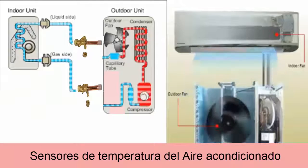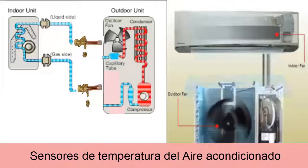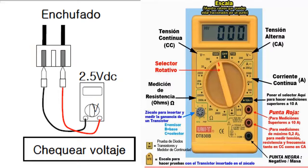It is also important to verify the power supply of the card to the sensor, since the card must supply a voltage so that the sensor can work. With the sensor connected, we verify the voltage using tips or needles with a multimeter on the scale of 20 volts DC. The value we are going to read is about 2.5 volts.